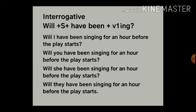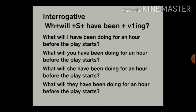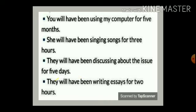For interrogative yes/no type questions, it starts with the helping verb: 'Will I have been singing for an hour before the play starts?' 'Will you have been singing?' 'Will she have been singing?' 'Will they have been singing for an hour before the play starts?' For interrogative WH questions: question word, then will, then subject, then the rest. 'What will I have been doing for an hour before the play starts?' 'What will you/she/they have been doing?'